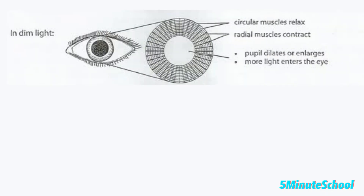When there are low light levels, more light is allowed to enter the eye. The radial muscles contract so the iris opens up, which makes the pupil larger, allowing more light to enter.